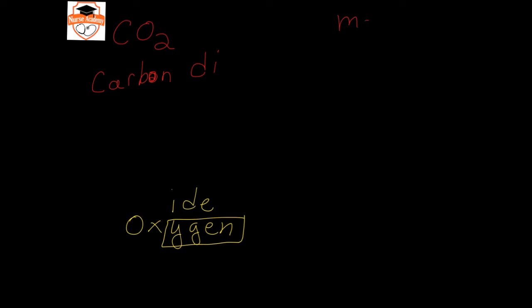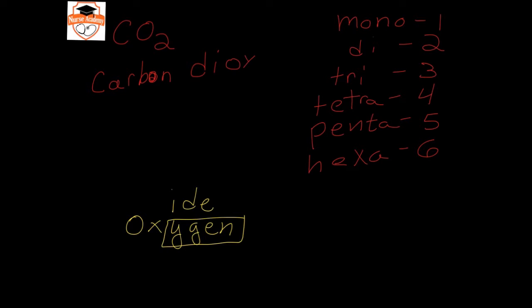We would use carbon 'di' because di is the prefix for two. If you remember, mono is one, di is two, tri is three, tetra is four, penta is five, and hexa is six. We're then going to put dioxide here at the end, and this is a common compound. I'm sure that you've heard of carbon dioxide before.